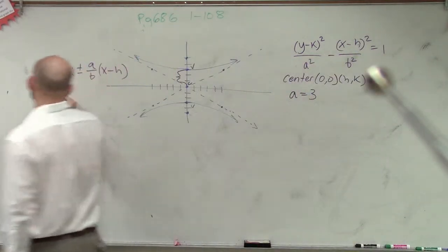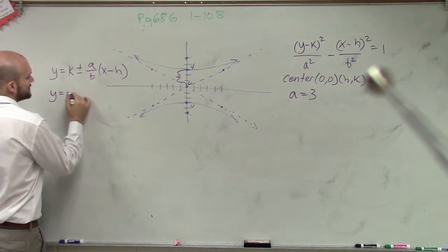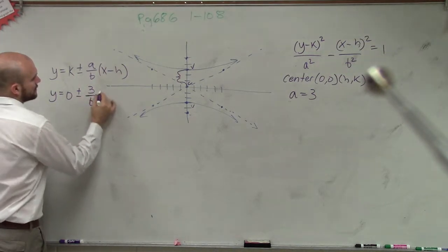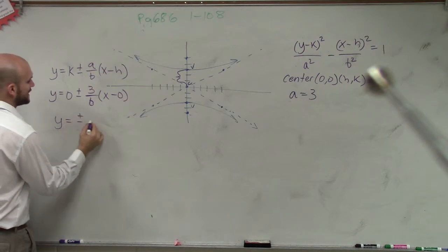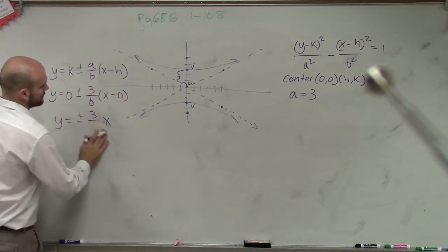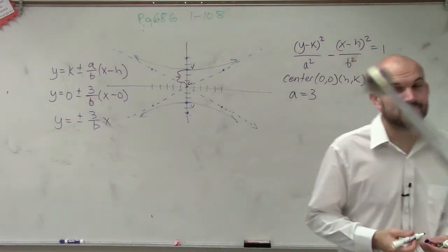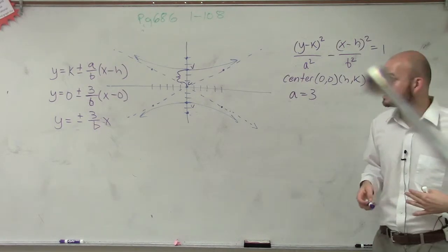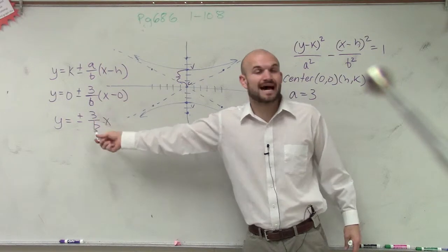And do we know what a is? a is 3. So right now, we have 0 plus or minus 3 over b times (x - 0), which really is y equals plus or minus 3 over bx. So now, if I can figure out what b is, I know it. Or if I can figure out what my slope is, because really, that's what that is, right? The slope. If I can figure out what the slope is, I can determine b.